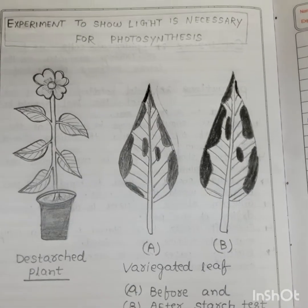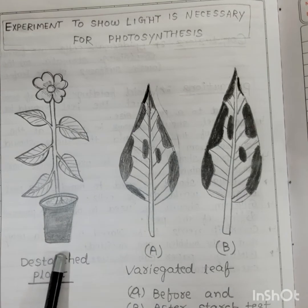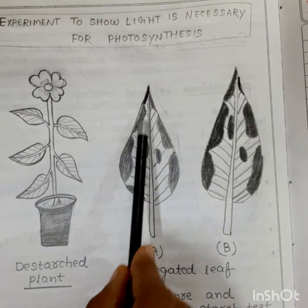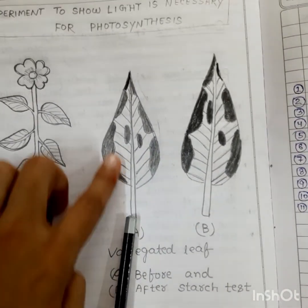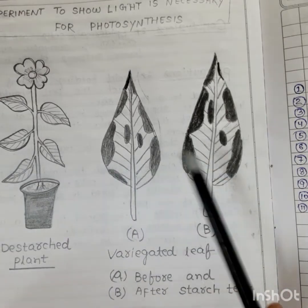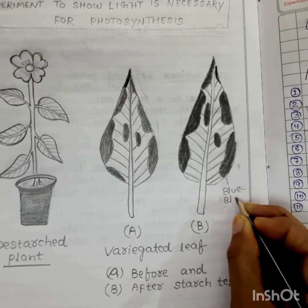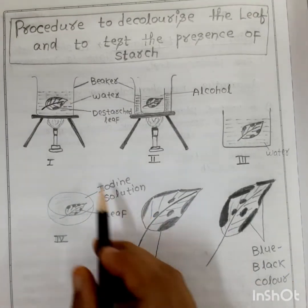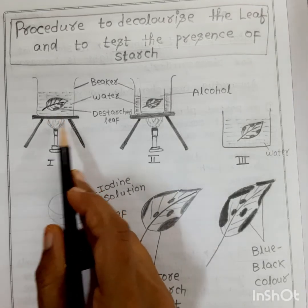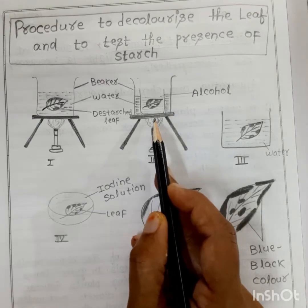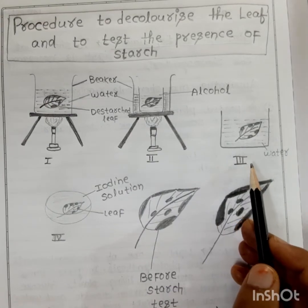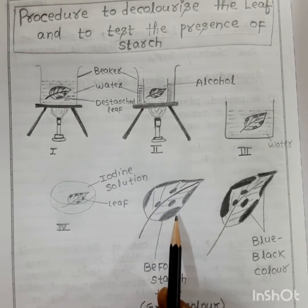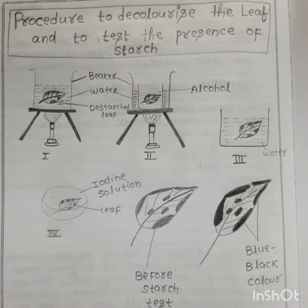More precautions: The black paper strips should be attached tightly on both sides of the leaf so that no sunlight enters the covered portion. Always use a water bath for boiling the leaf in alcohol, as alcohol is inflammable. Wash the leaf before performing the iodine test. For the diagram, we draw the potted plant kept in darkness for 48 to 72 hours, the leaf with marked green areas shown before and after starch testing, and the procedure to de-colorize the leaf — first boiling in water, then in alcohol in separate beakers, then washing, then adding iodine — where the green traced part turns blue-black. Always mention the date and page number.